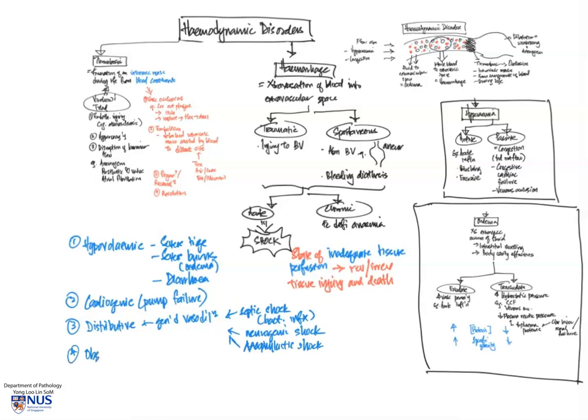And lastly, there is also obstructive shock. And this is usually due to pulmonary embolism, where there is a blockage of the pulmonary arterial circulation.